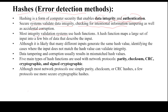Most integrity validation systems use hash functions, which map a large set of data input into a few bits of data that describe the input. It is likely that many different inputs generate the same hash value. Identifying cases where the input does not match the hash value can validate the integrity. Data tampering and corruption usually results in a mismatched hash value.